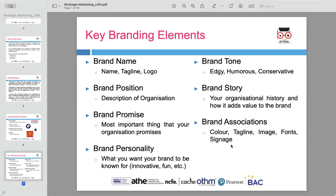Another key element is the brand promise, which refers to the most important value or experience the company promises to deliver to its customers. A strong brand also has a well-defined brand personality, representing what the brand wants to be known for — qualities like being innovative, fun, or trustworthy. Brand tone refers to the style in which the brand communicates, such as being edgy, harmonious, or conservative. Brand story tells the history of the organization and how that history adds value to the brand.